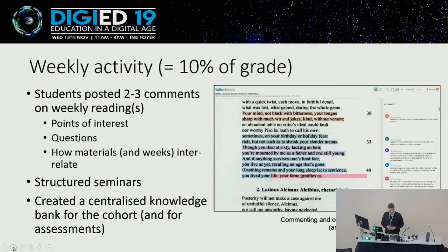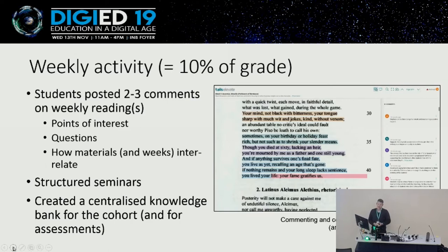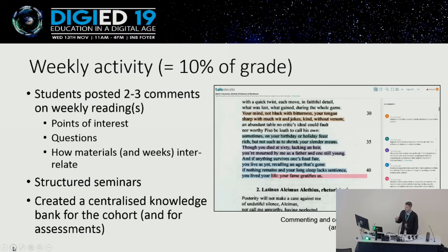The way I encouraged them to do this was to set up a Talis Elevate site. It simply looks like a PDF viewer, which is online, and which students can annotate — the different colours pertain to the different students adding comments as they work through the reading. Each week, I asked each student to post between two and three comments on the weekly readings. They highlighted a bit of text and added a comment about things they found interesting, questions it raised for them, and how the materials from different weeks of the module link to each other.